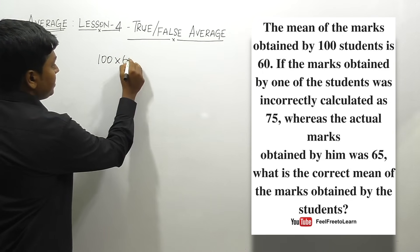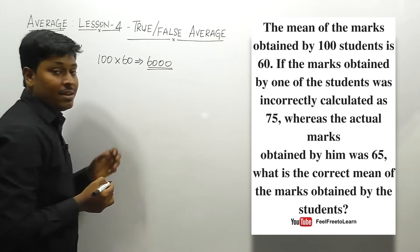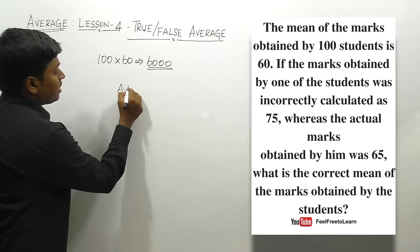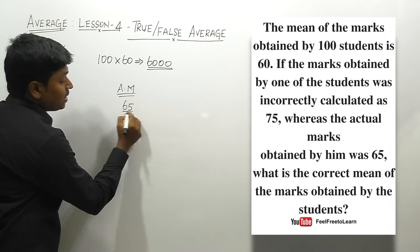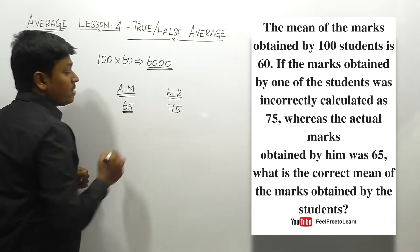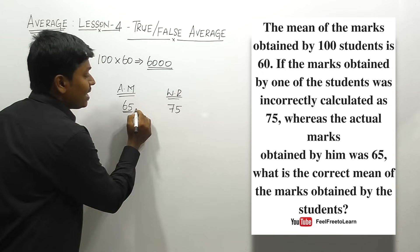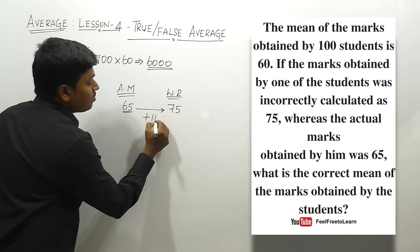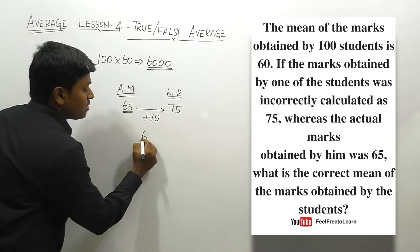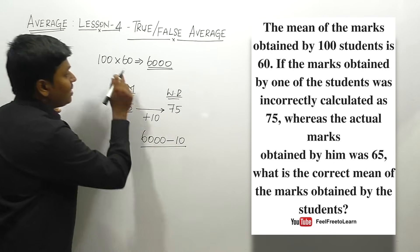There are 100 students and the average is 60, so 100 × 60 = 6000 is the total marks obtained by the 100 students. One student's actual mark is 65 but the wrong reading taken was 75 — that is 10 marks more than the original. So we need to subtract 10 from the total 6000, then divide by 100.